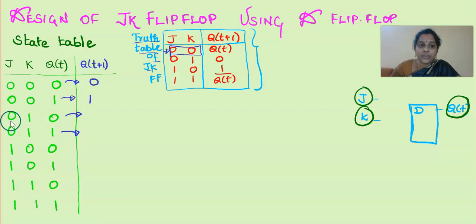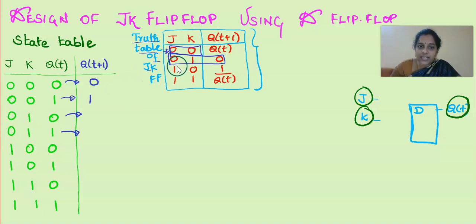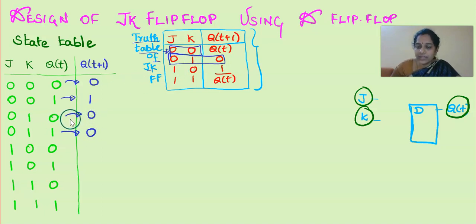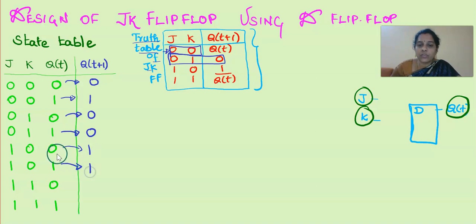For the next rows, if the J, K values are 0, 1, according to this particular truth table, the output is independent of the previous state. If the inputs are 0, 1, then the output will be 0 irrespective of the present state. And for the J=1, K=0 cases, the next state will be 1 irrespective of the present state.